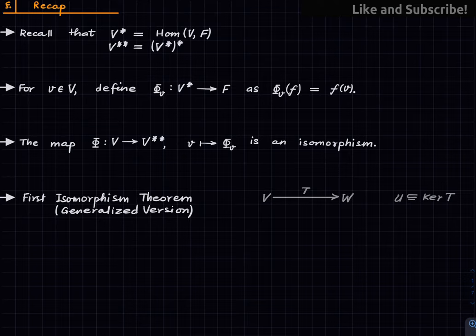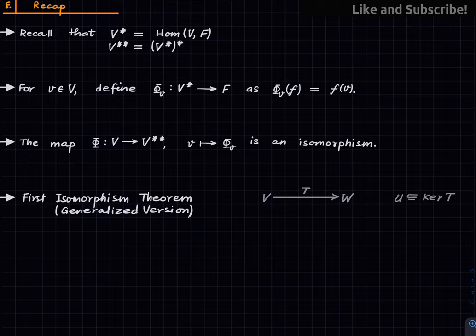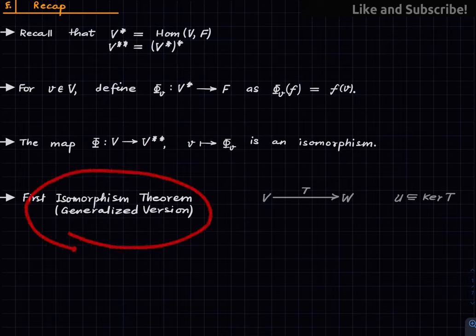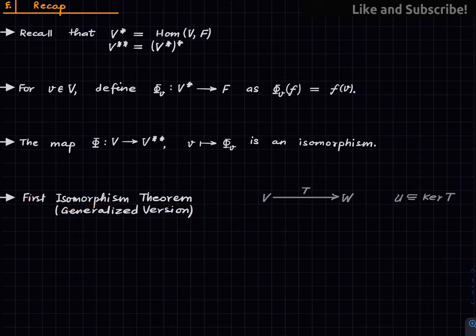This is natural — we did not formally discuss the meaning of naturality, but it is natural in a colloquial sense. You can say it is natural because you do not require any basis to write down this map. We will need the first isomorphism theorem, the generalized version of it, which we have used many times.